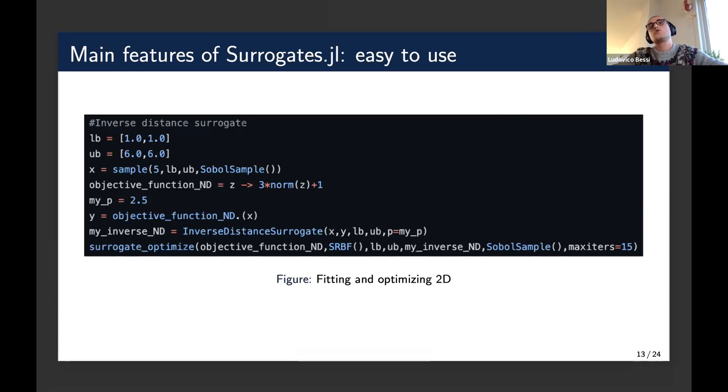It's important for surrogates to be easy to use as well. So here we have a very simple example of a two-dimensional surrogate model. We can just call our sample, evaluate our objective function on the sample, and then choose a surrogate. We pass the points, the bounds, and some hyperparameter that's always changing. And then if we want also to optimize our surrogate, we can just call surrogate_optimize passing a bunch of different parameters and, most importantly, the name of the optimizer.